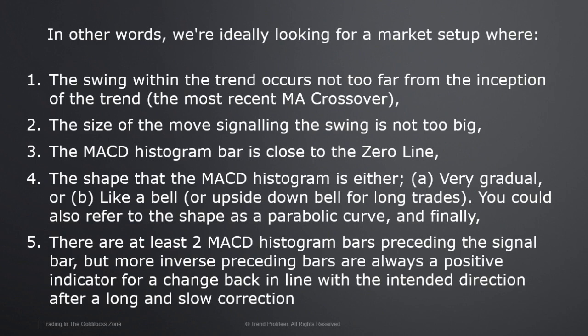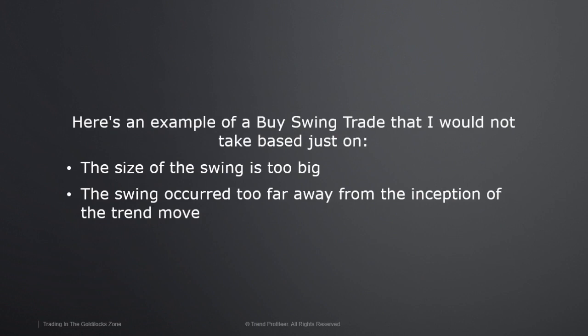Finally, five: there are at least two MACD histogram bars preceding the signal bar, but more inverse preceding bars are always a positive indicator for a change back in line with the intended direction after a long and slow correction. If you see four, five, six, or seven histogram bars that are inverse to the swing direction you want to trade, that's a good thing. It's a good sign when you can see quite a slow correction, and that swing has more probability of success in your intended direction.